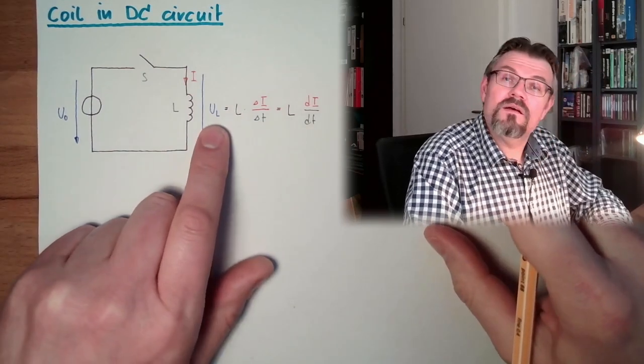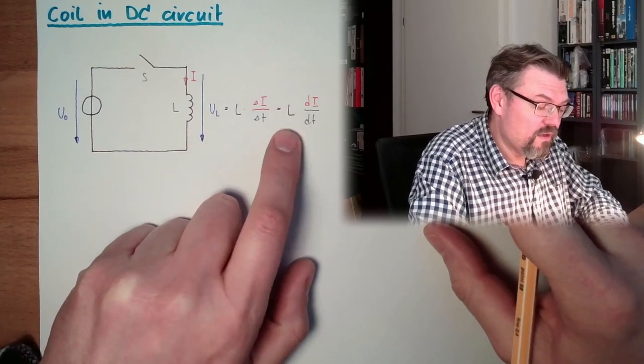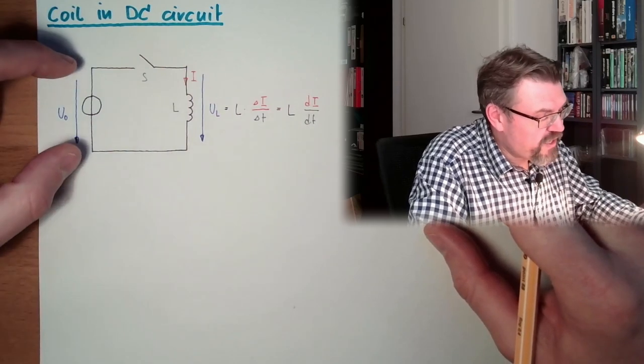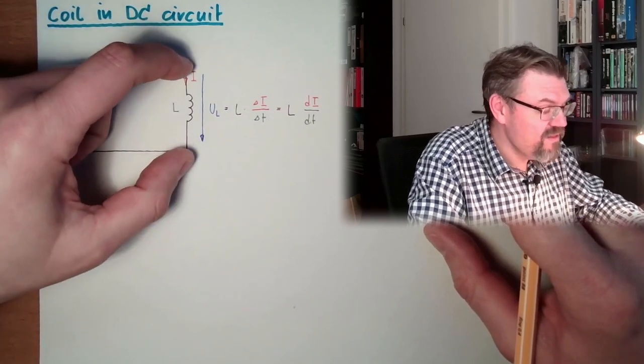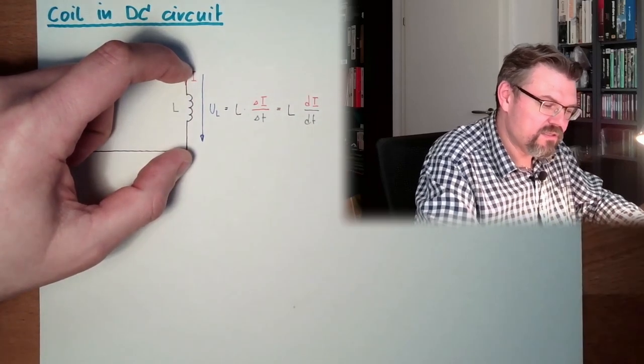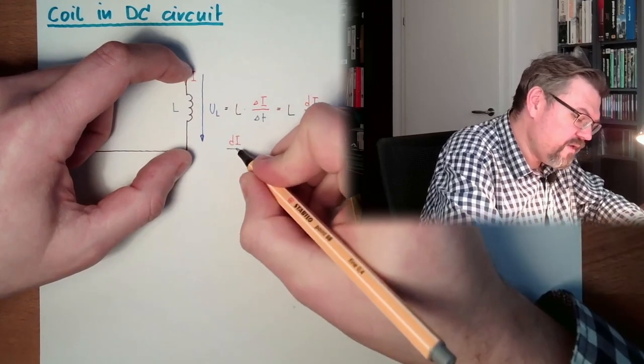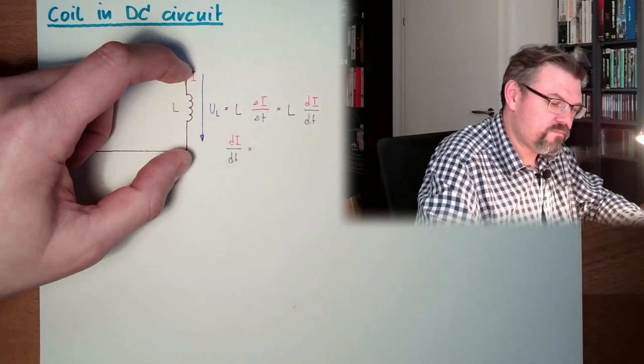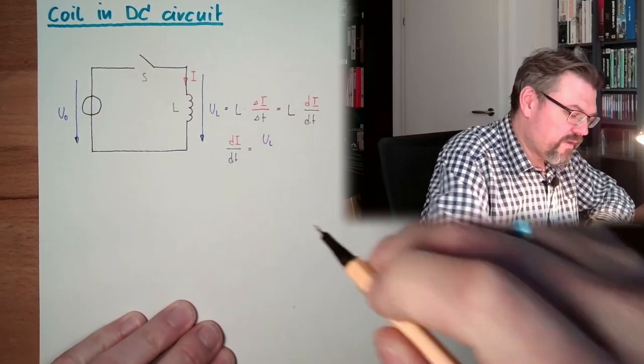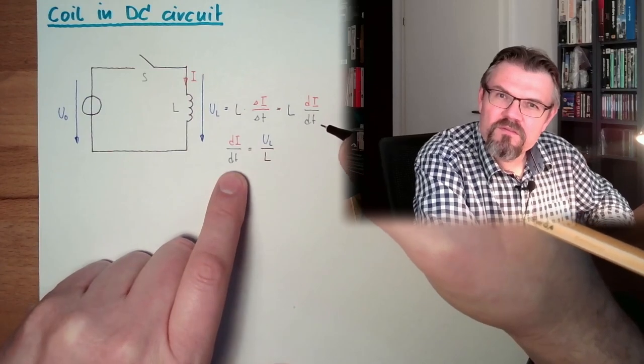This means the coil, that the voltage at the coil is proportional to the change rate of the current. And now we are switching an ideal voltage source to an ideal coil. What will happen? Let's transform this. This means our current change, the change rate of our current, dI to dt, equals UL divided by L. If UL is constant, the change rate of the current is constant, so that the current will grow.